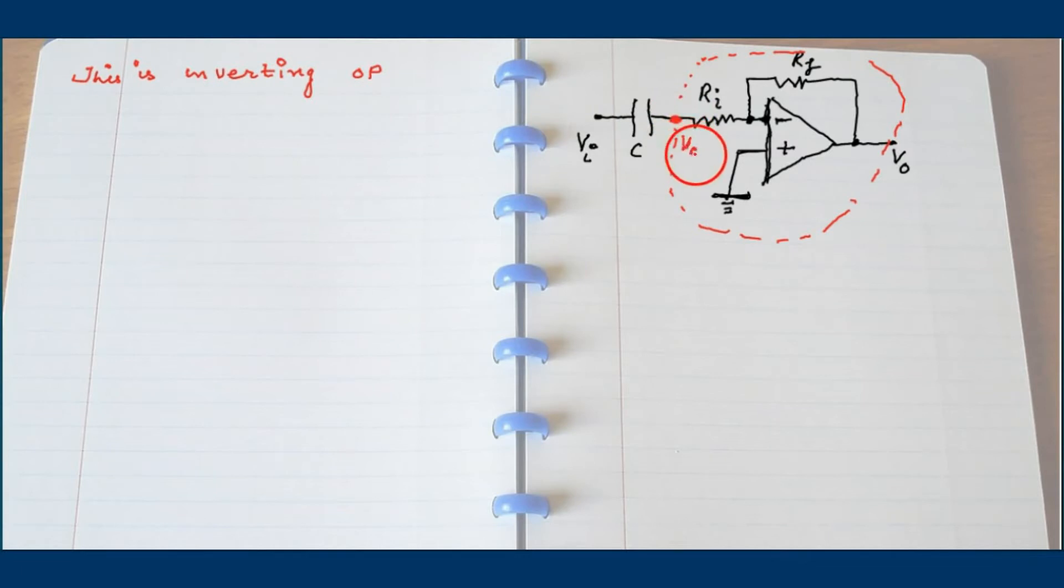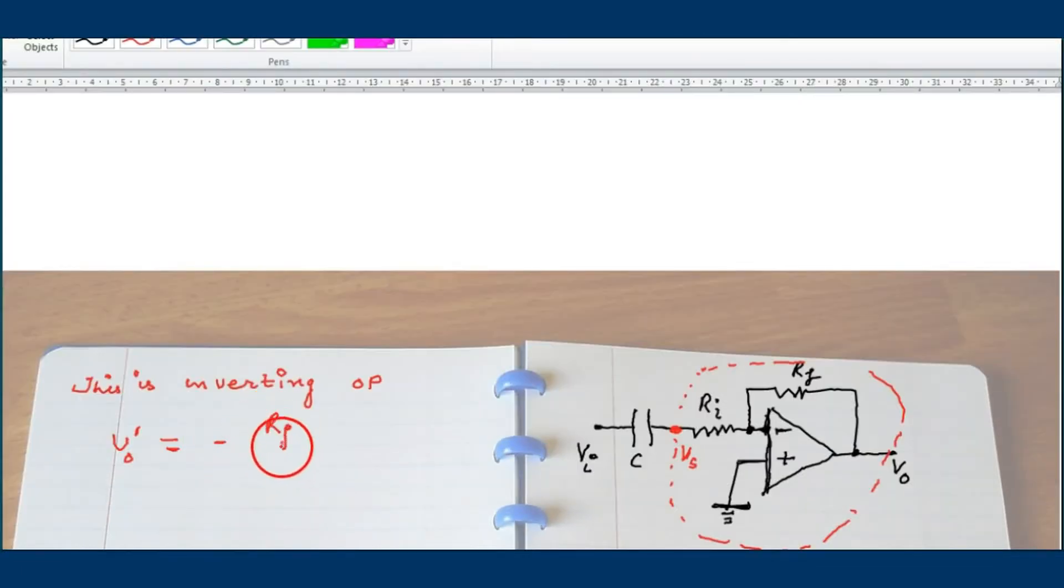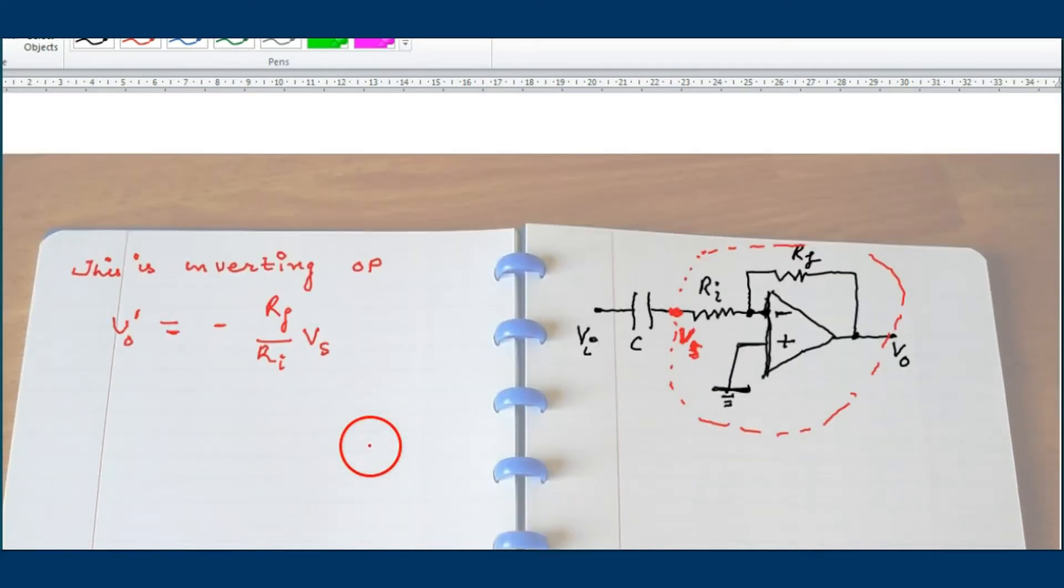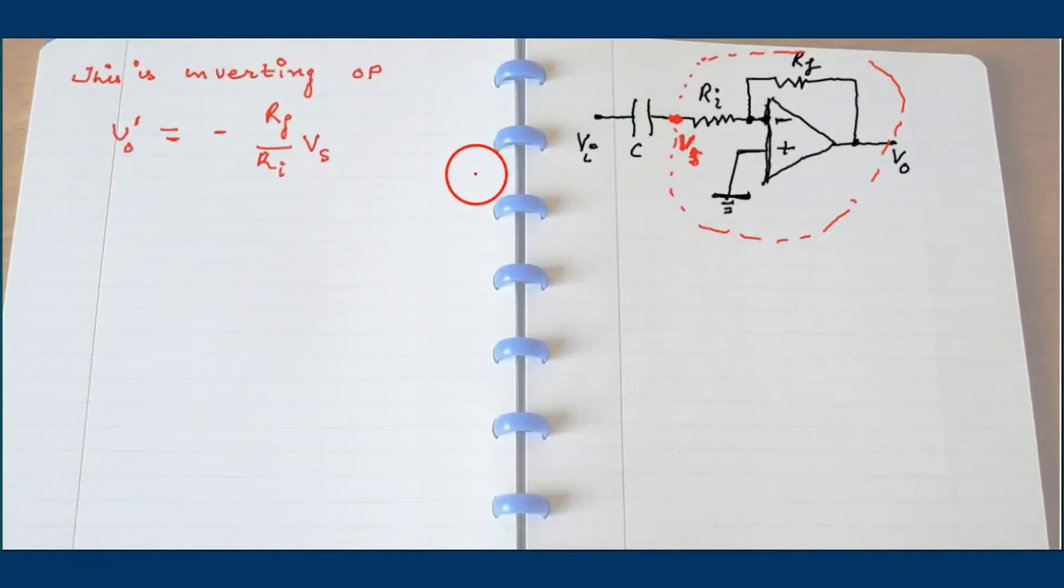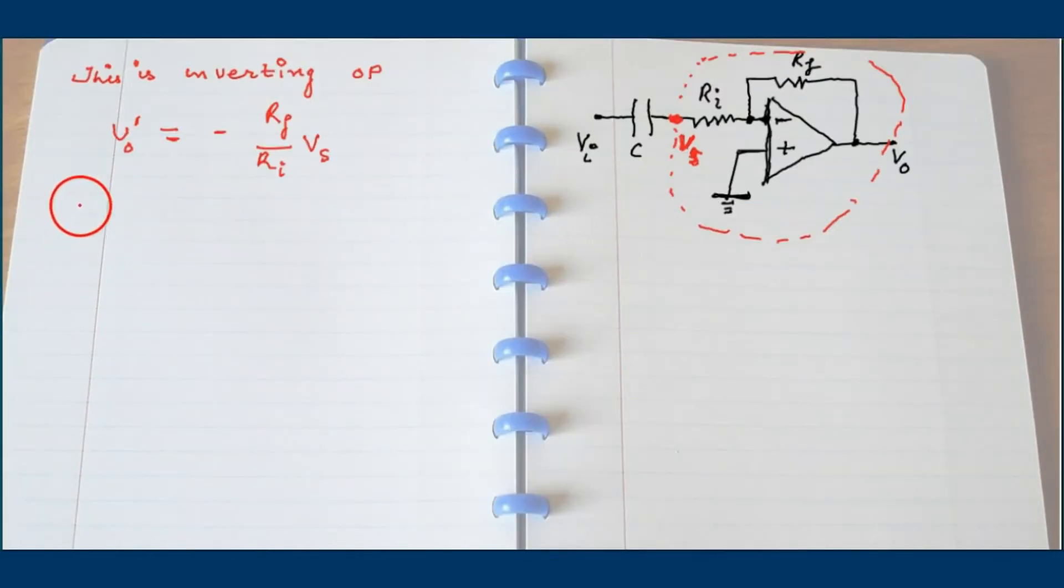Inside this red boundary, it is just an inverting amplifier and the gain will be output equals minus RF upon RI into the signal which is Vs.